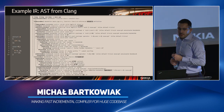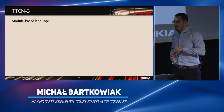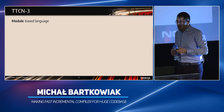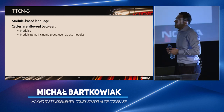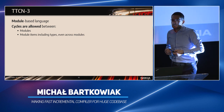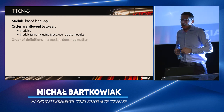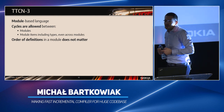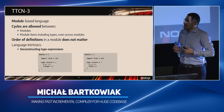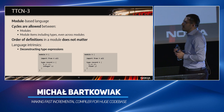Before we move further, let's say a couple of words about TTCN3. TTCN3 is different from C or C++ in that it is a module-based language. Cycles are allowed not only between modules, but also between module items — module definitions including types — and even across modules. This is important because it makes compilation a bit harder. Also, the order of definitions in a module does not matter, although we do not have any kind of forward declarations. There are also some specific features of TTCN3 which make the compilation a bit harder.